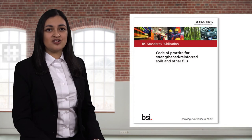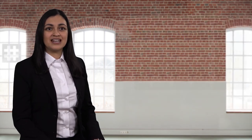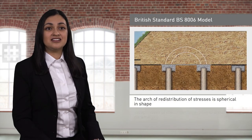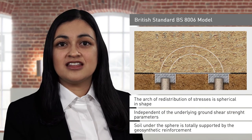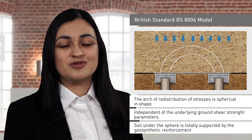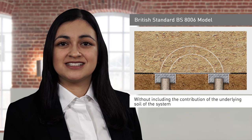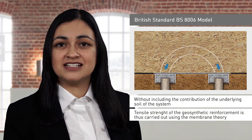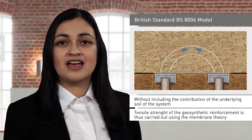One of the most widely used models can be found in the British Standard 8006. This model assumes that the arch of redistribution of stresses is spherical in shape and that it is independent of the underlying ground shear strength parameters. The soil under the sphere is therefore totally supported by the geosynthetic reinforcement without including the contribution of the underlying soil to the system. The calculation of the tensile strength of the geosynthetic reinforcement is thus carried out using the membrane theory.